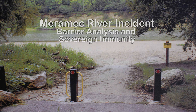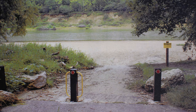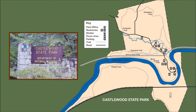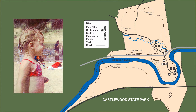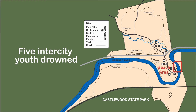On July 9th, 2006, an inner-city youth group servicing disadvantaged youths sponsored an outing at the Castlewood State Park near St. Louis, Missouri. It was a typical outing with picnicking, volleyball, and swimming at the sandy beach on the Merrimack River. Five inner-city youth drowned.